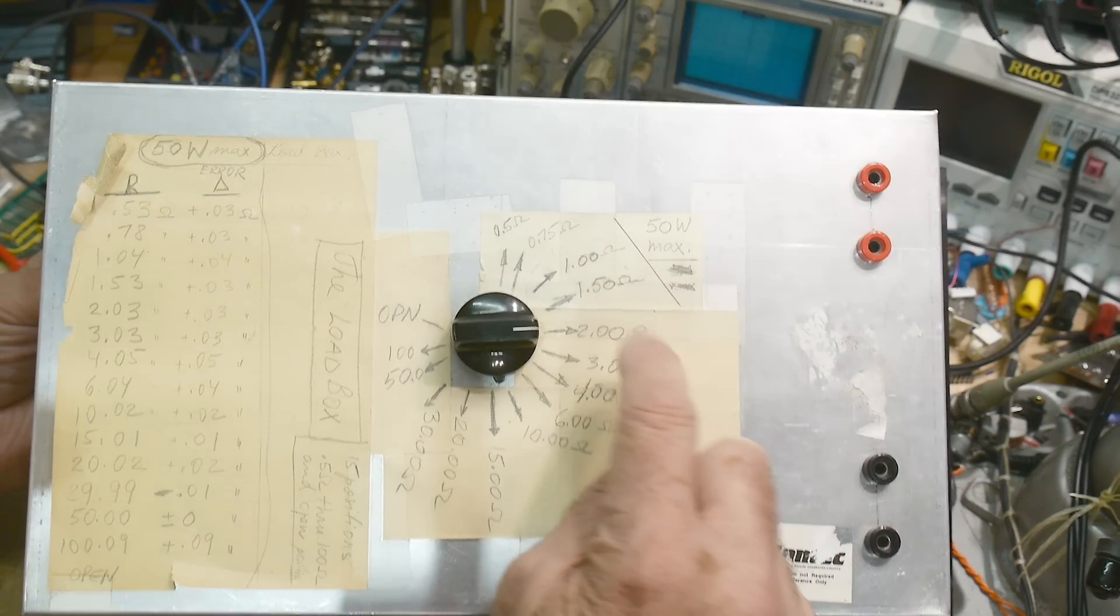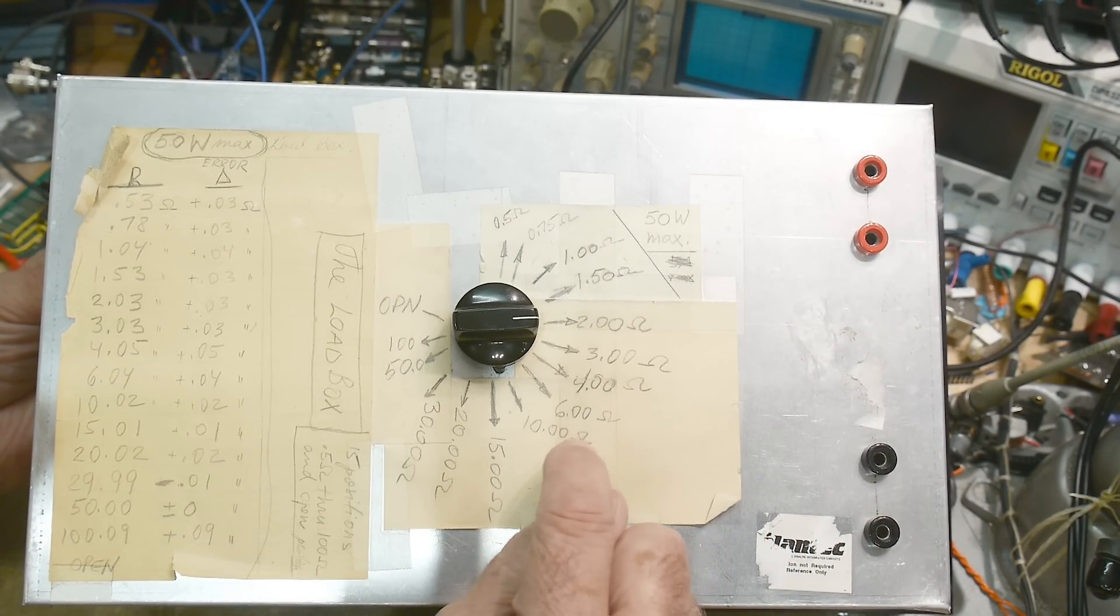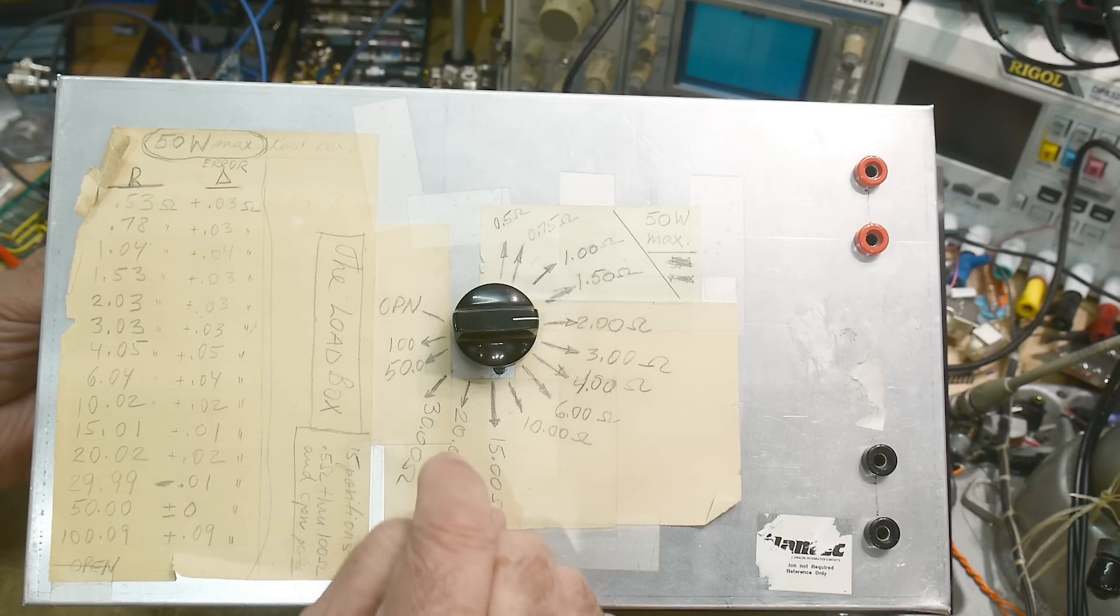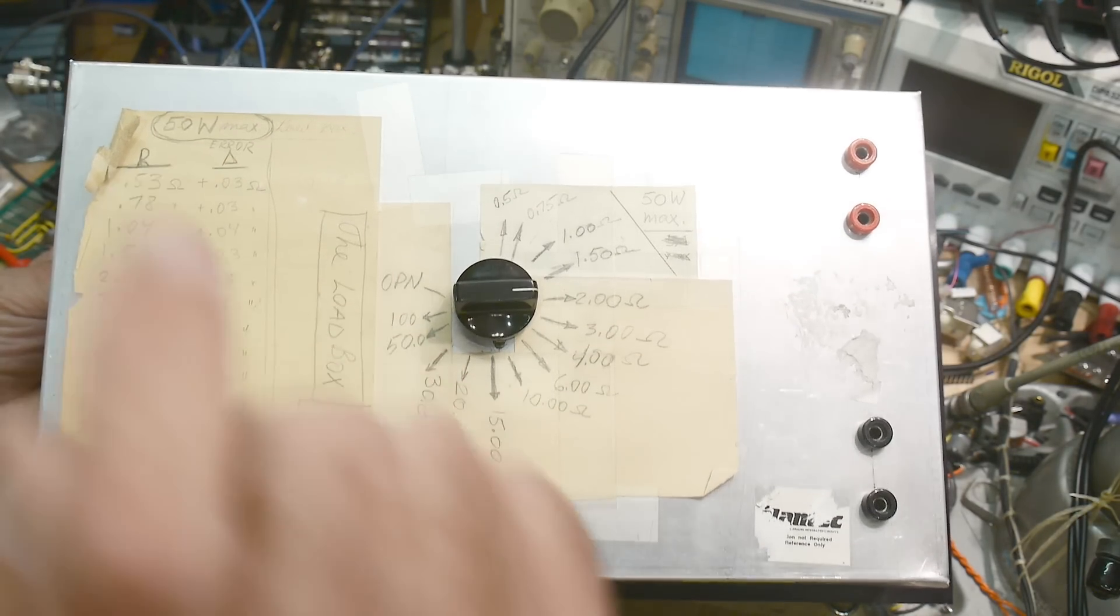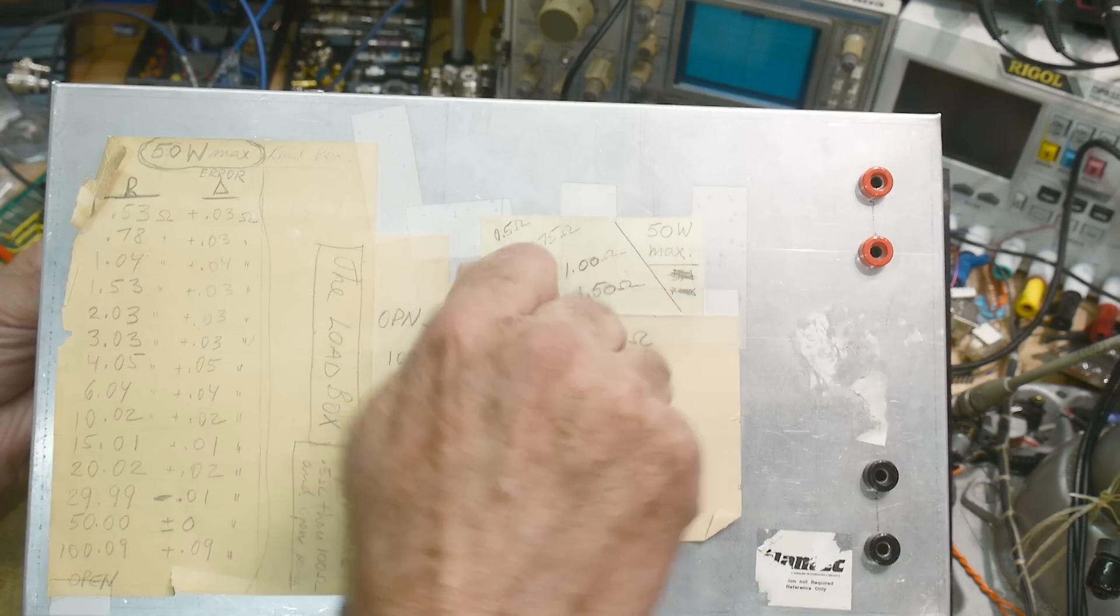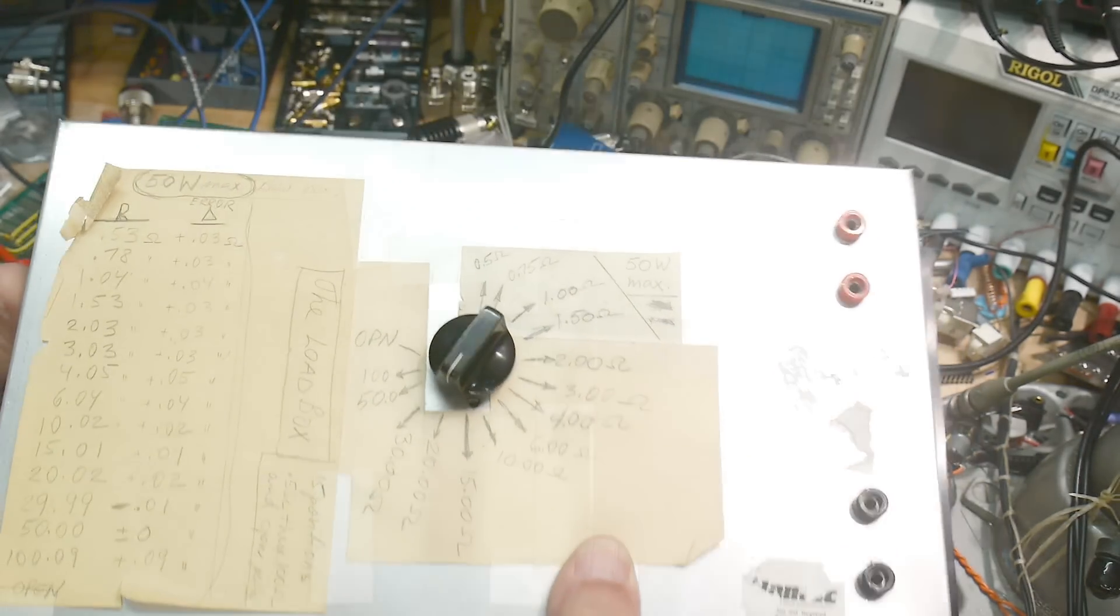So yeah, 0.5, 0.75, 1, 1.5, 2, 3, 4, 6, 10, 15, 20, 30, 50, 100 ohms, and then an open position.